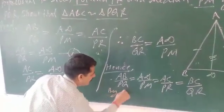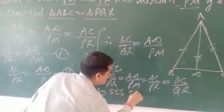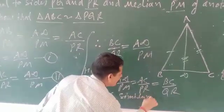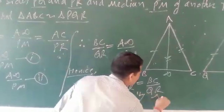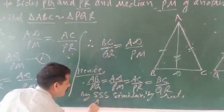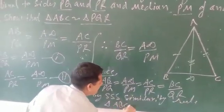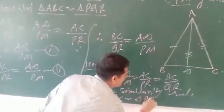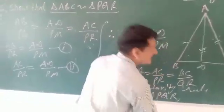So we have seen that by triple S similarity rule, triangle ABC similar to PQR. Hence, proved.